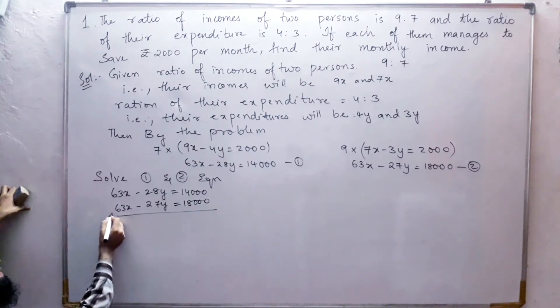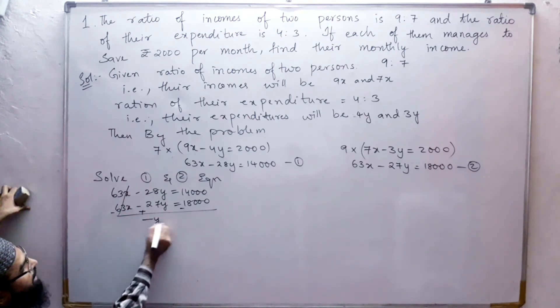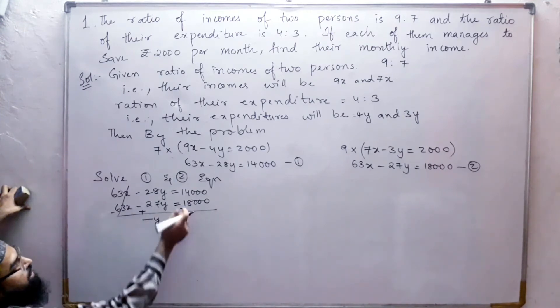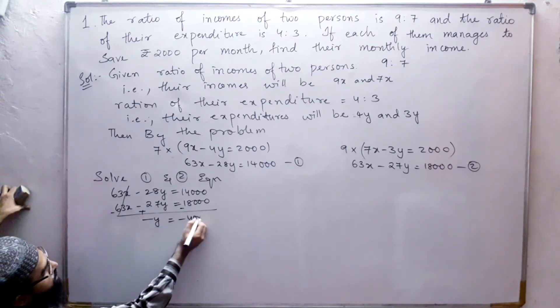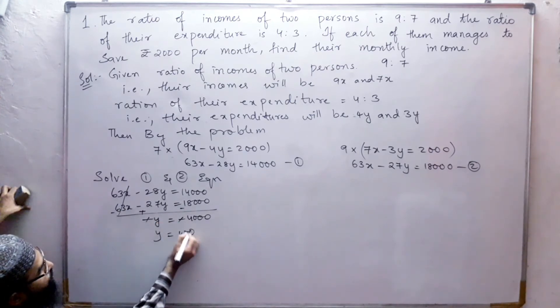Let us change the signs: minus, plus, and minus. This gets cancelled. What is left: 1y. From 18,000 if we subtract 14,000 we get 4000. So y equals 4000.